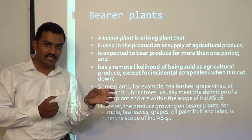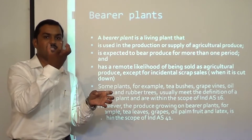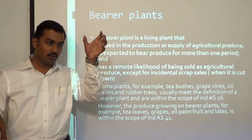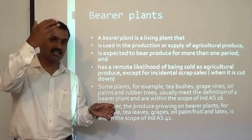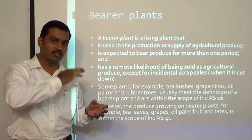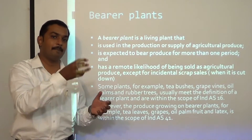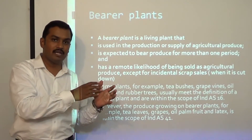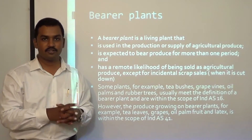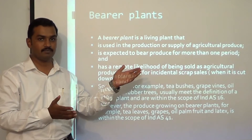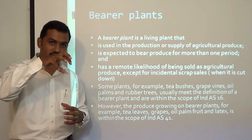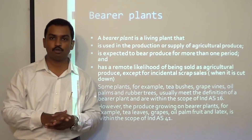For example, in an apple farm, the apple tree is a bearer plant accounted for under IAS 16, but the apples are biological assets within the scope of IAS 41. For the apple tree under IAS 16, all costs incurred until the tree reaches maturity are capitalized, and then depreciated over its useful life. The produce from the bearer plant remains within the scope of IAS 41.